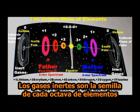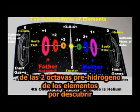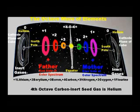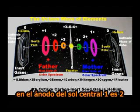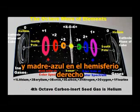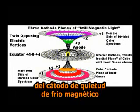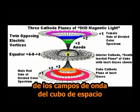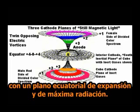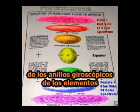The inert gases are the seeds for each octave of elements, as the spiraling electric vortices wind them up from their nebulous and unseen conditions of the undiscovered two pre-hydrogen octaves of the elements into the extremely dense conditions of the radioactive elements of the ninth octave. There are eight tones to the octave, and the center sun anode is two, which are equally mated, because it is a balanced pair with father red on the left hemisphere and mother blue on the right hemisphere. Twin opposing electric vortices are projected from the inert gas planes of cold cathode magnetic stillness of the cube wave fields of space into their opposite sexual mates where they meet, creating spheres of intense heat with an equatorial plane of expansion and maximum radiation.